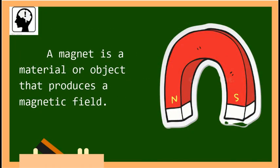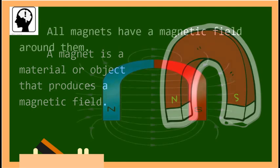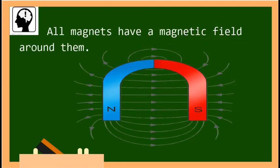Let's remember, kids: a magnet is a material or object that produces a magnetic field. All magnets have a magnetic field around them — magnets have an invisible magnetic field which attracts certain metals.